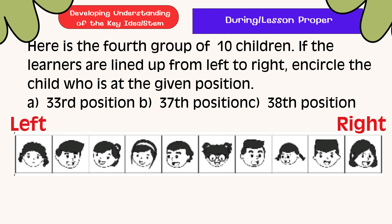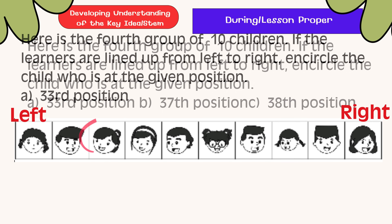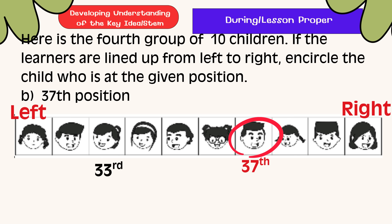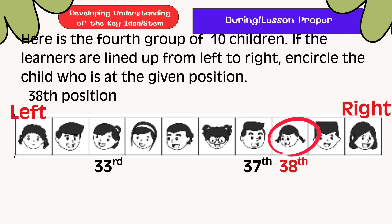Here is the fourth group of ten children. If the learners are lined up from left to right, circle the child at the given position. We will find the learners at the 33rd position, 37th position, and 38th position. Let's look at them. Here is the learner at the 33rd position, and lastly, here is the learner at the 38th position.